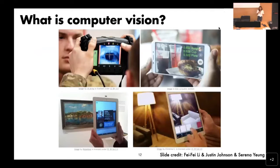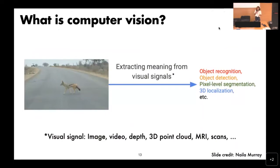What is computer vision? We're making a lot of pictures and videos — a lot of visual data these days with all the cameras we have in our pockets. We want to automatically analyze this visual content. Given an image, you want to extract meaning from visual signals: recognize objects, detect and localize them, segment every pixel, or do 3D localization. The visual signal doesn't have to be an image — it can be video, depth, 3D point clouds, or medical imaging like MRI.